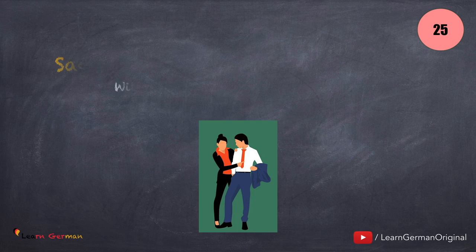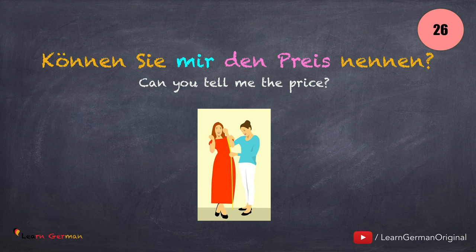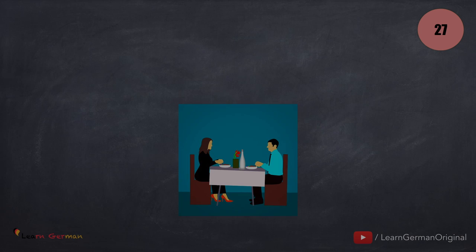Moving on to the next sentence: Können Sie mir den Preis nennen? Jemandem den Preis nennen.